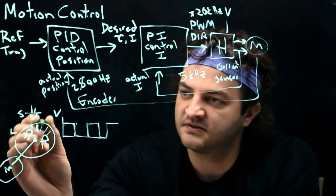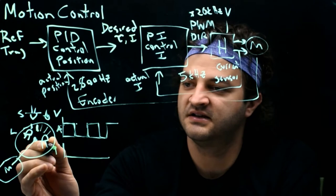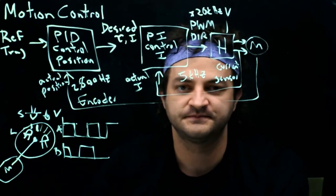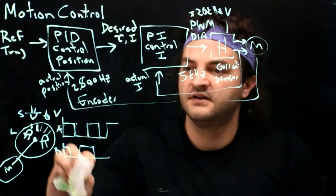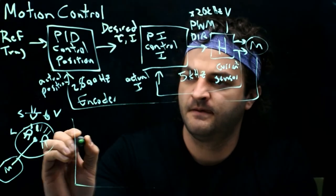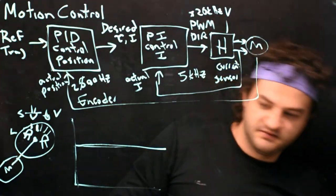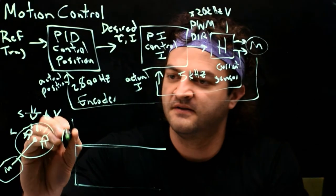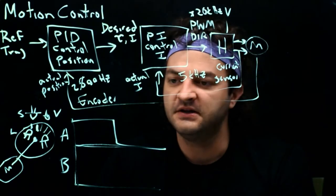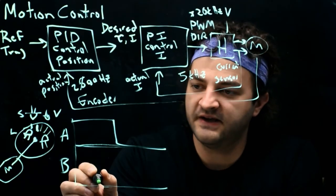Exactly 45 degrees — or some subset of 45 degrees — away is another sensor. We call the first one channel A and the second channel B. B does the exact same thing — it generates a square wave as the motor rotates. When one line goes by, A produces a high and a low. B also produces one high and low with that line, but it is perfectly out of phase.